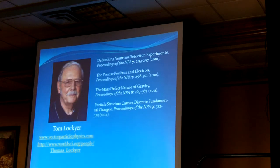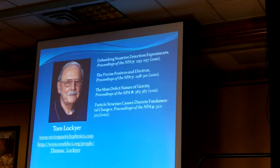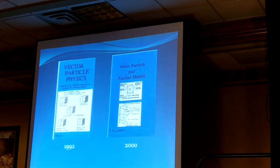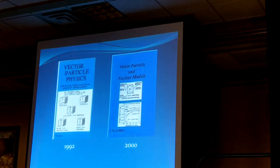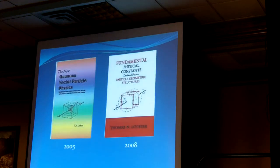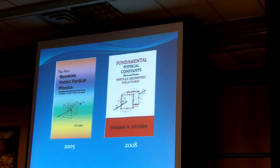This is Tom Lockyer himself. He's written several papers for the NPA and several books, which I've read them all. He wrote the first one in 1992, 'Vector Particle Physics.' He also wrote 'Fundamental Physics and Constants' and 'Physical Constants Derived from Particle Structures.' That appeals to me because I personally believe it's possible to find out what 1836 is — where that comes from.